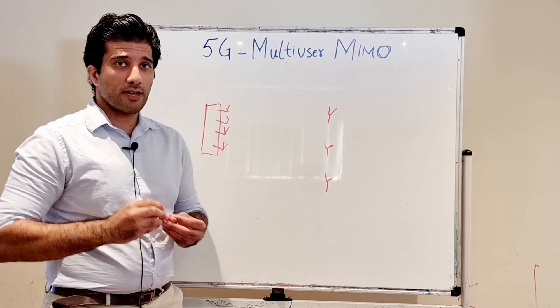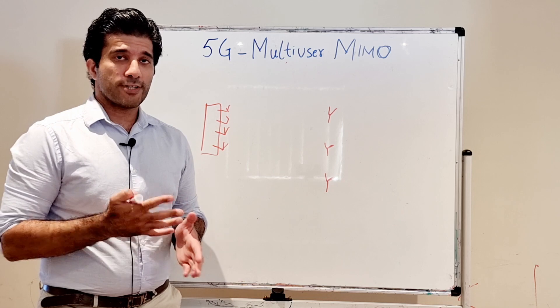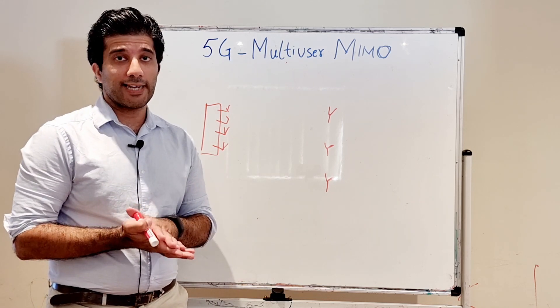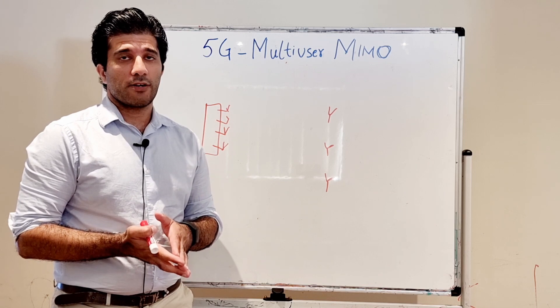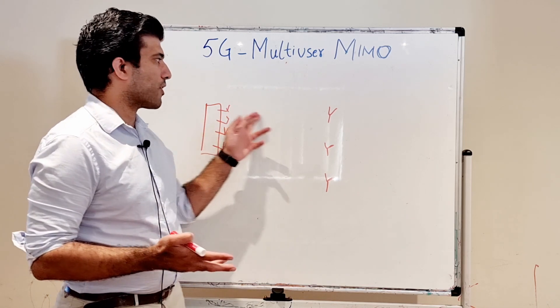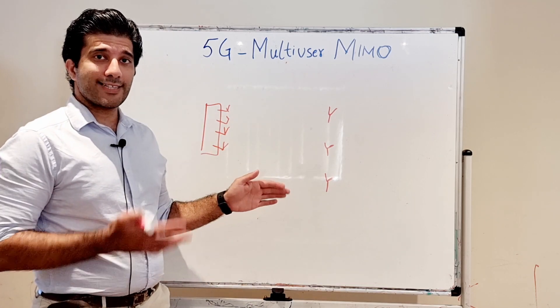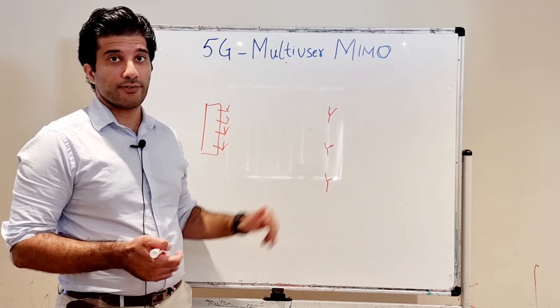What multiuser MIMO does is it forms multiple beams which are orthogonal to each other. The concept of orthogonality is very important because orthogonality makes these waves or beams cancel each other out at the other receiver.